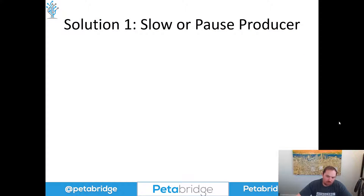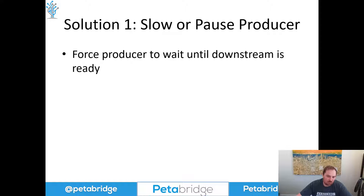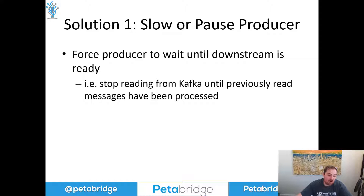What backpressure support is ultimately about inside an asynchronous application is: the consumer needs some way of signaling to the producer that it needs to slow down — I have as many events as I can handle right now, please pause production or slow it down until I'm ready to consume more. We need to force the producer to wait until the downstream is ready. If SQL Server is overwhelmed and requests are timing out, there's no benefit in continuing to hammer it by pulling more events from Kafka. It would be better to tell Kafka we're going to pause reading this partition until we've processed the backlog of everything that needs to be saved to SQL Server.